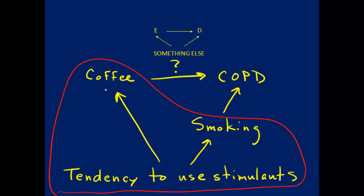For example, the odds or percentage of coffee drinkers will be higher among smokers than non-smokers, and the percentage of smokers will be higher among coffee drinkers than non-coffee drinkers. It's this association between coffee and smoking that actually causes confounding in the estimated causal effect of coffee on COPD.